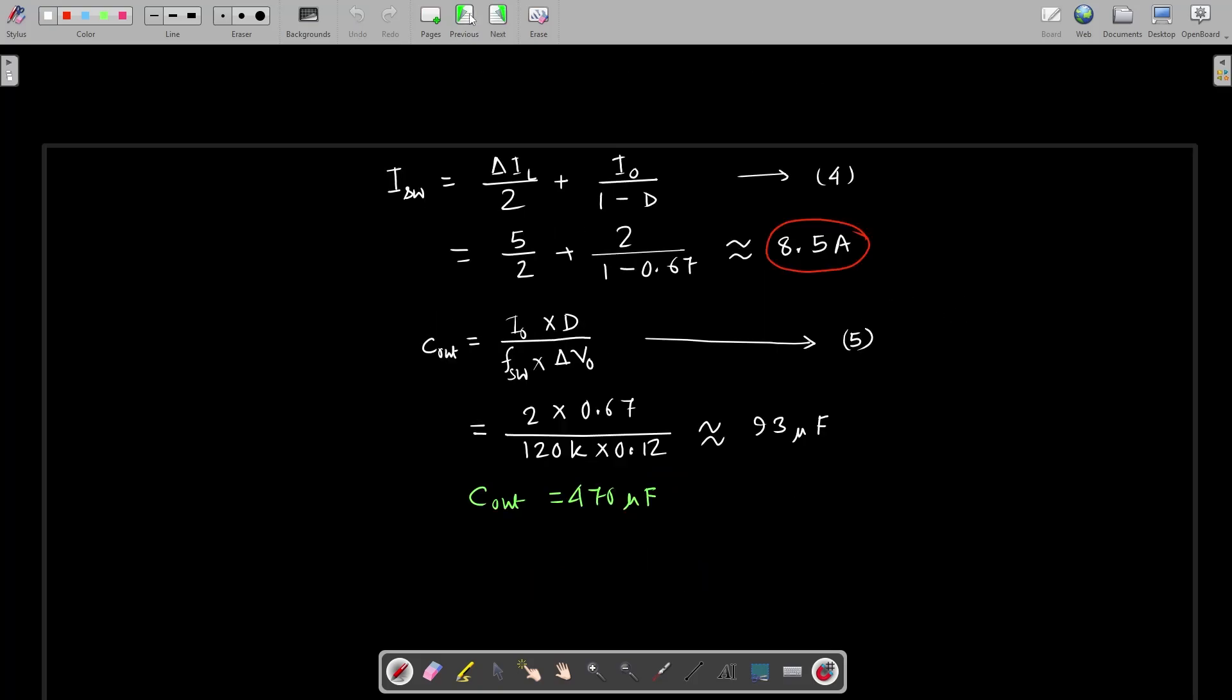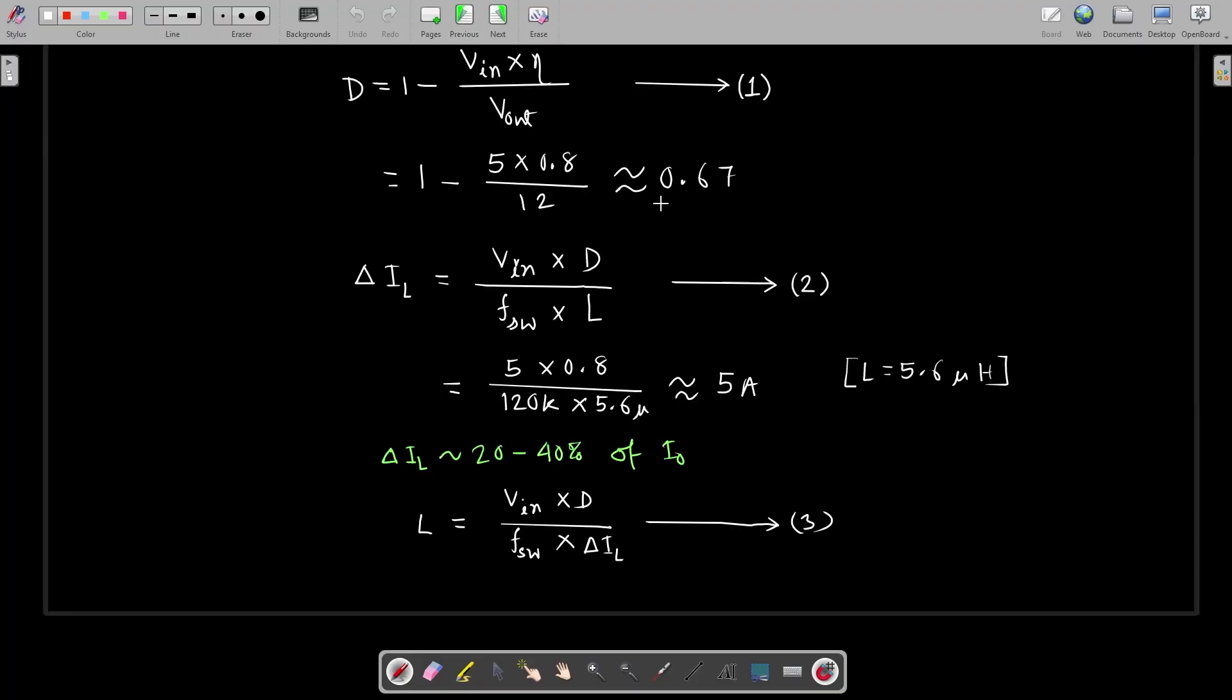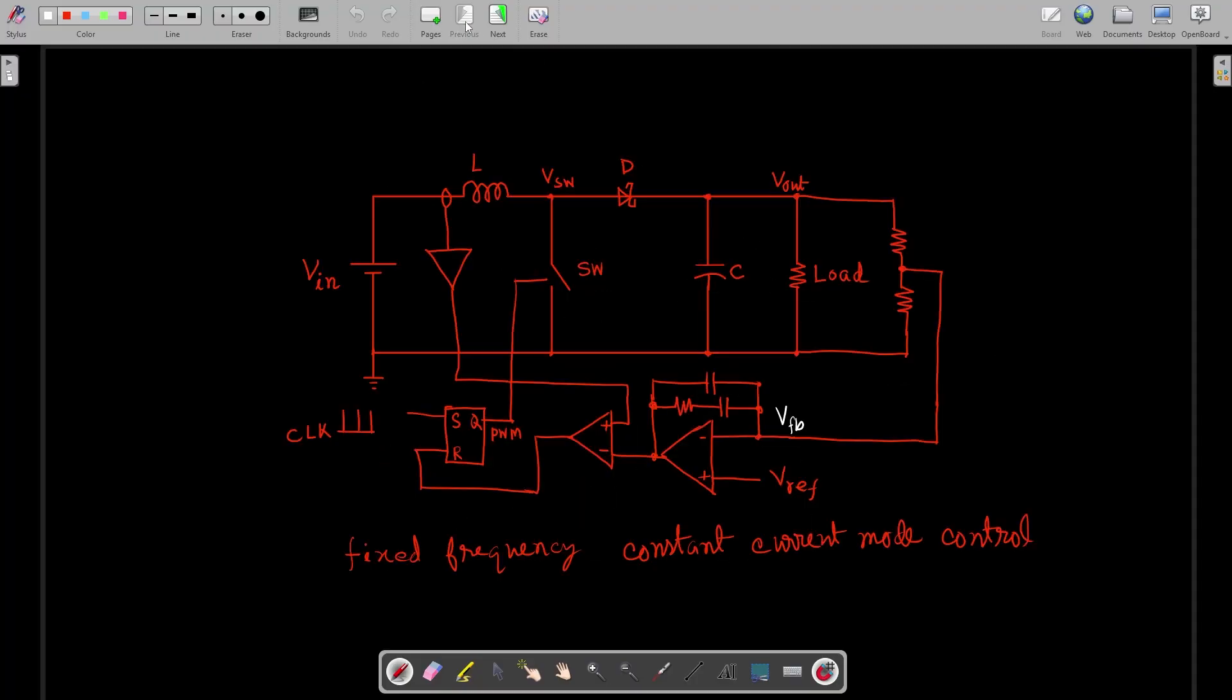Now as the duty cycle goes beyond 50 percent, sub harmonic oscillation may arise, and to suppress it we need to add a compensating ramp with the current sense amplifier output. The reason we call it as peak current mode control: we not only take the voltage feedback but we also monitor the inductor current during the on time phase of the switch on every switching cycle. To sense the inductor current I'm using a 10 milliohm sensor resistor and amplify the voltage across it with an op-amp adder circuit. The second input of the adder takes the compensating ramp. The compensation ramp is generated from the same ramp signal which generates the PWM clock.